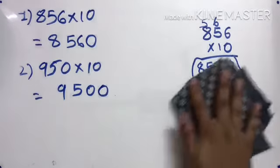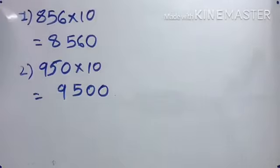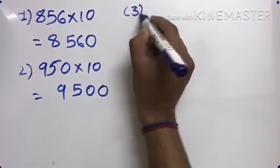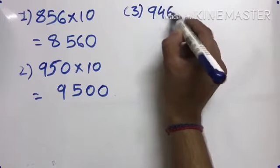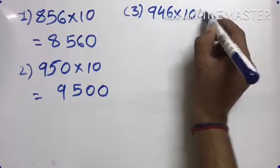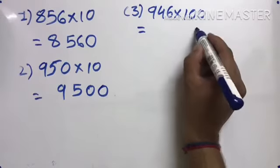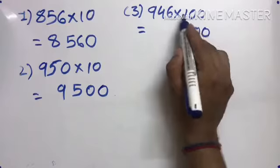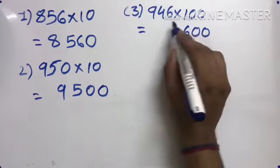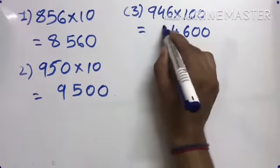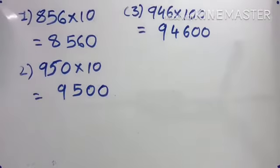Now let's do multiplication by 100. 649 times 100. Two zeros, so I add two zeros. Then 1 times 6 is 6, 1 times 4 is 4, 1 times 9 is 9. Done.